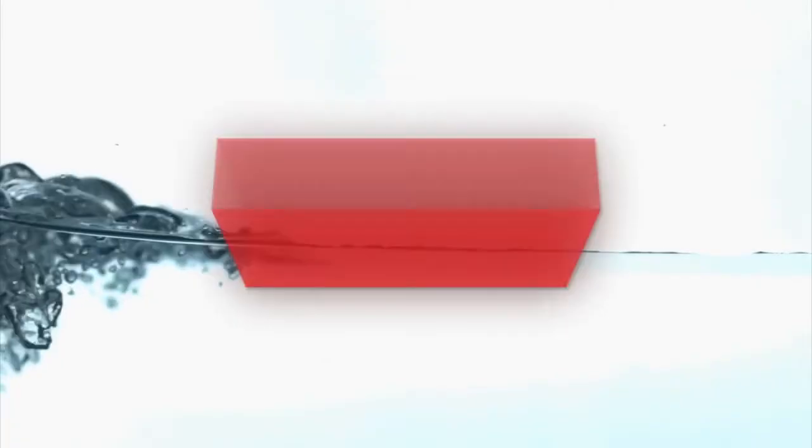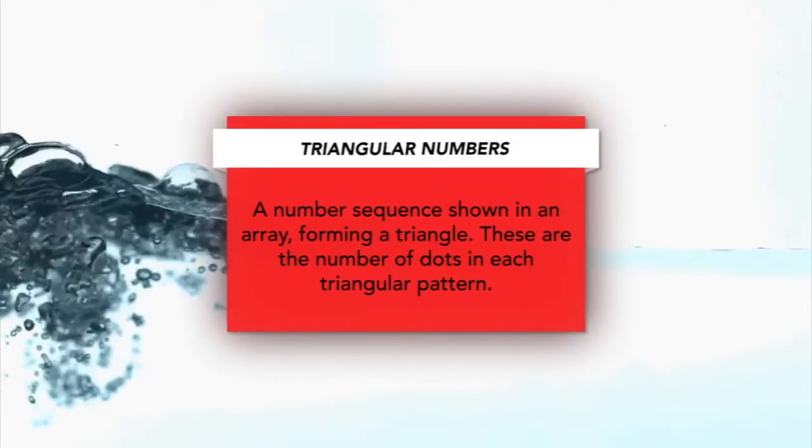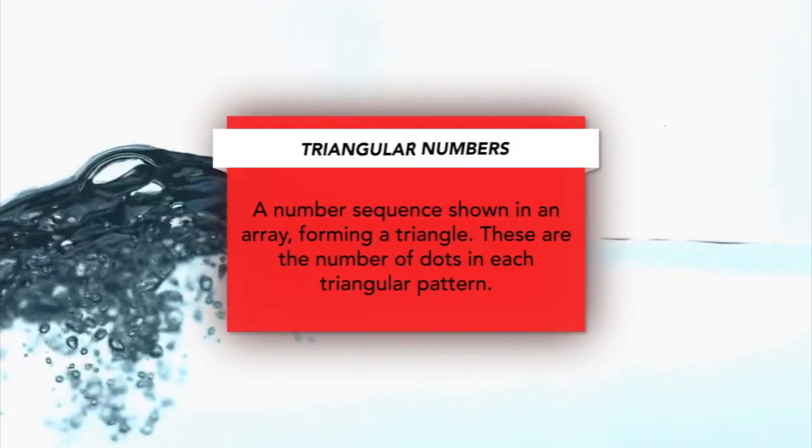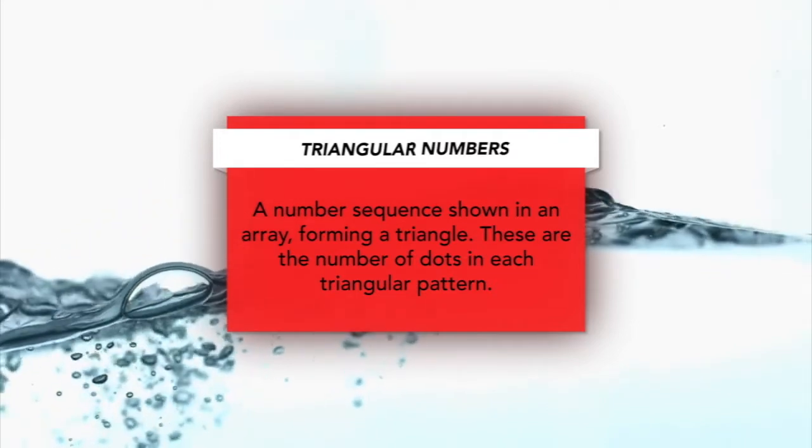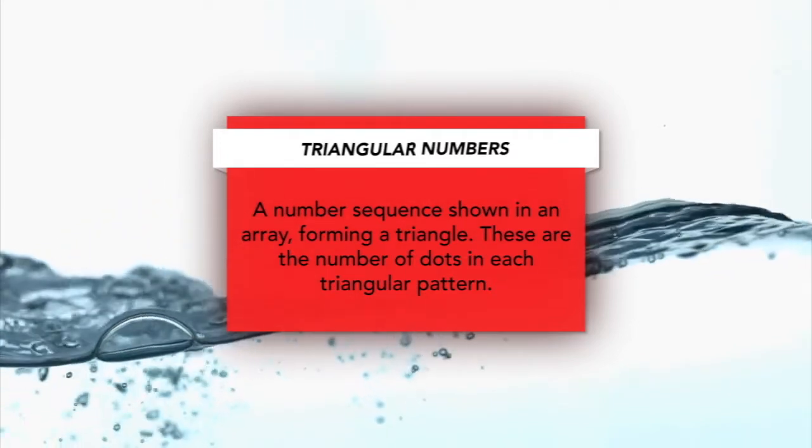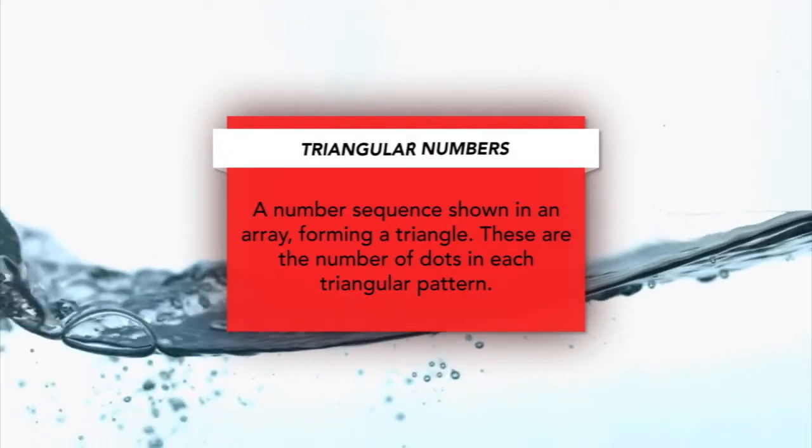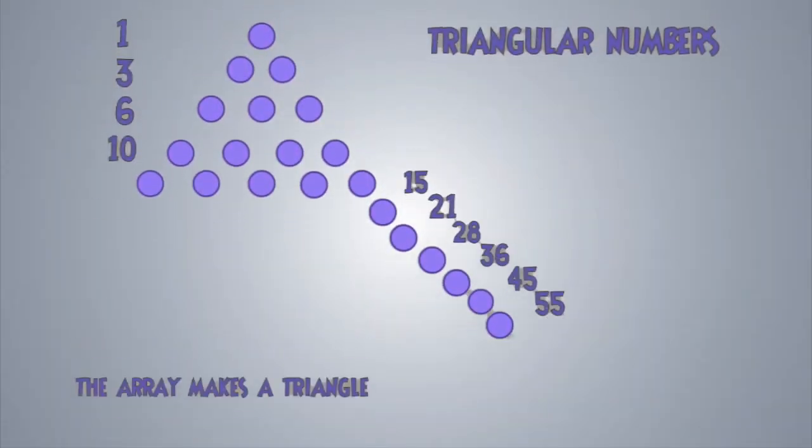Now triangular numbers are a sequence shown in an array, forming a triangle. You can see here our triangular shape in the array with the dots there. First triangular number is 1, with representation of 1 dot there.